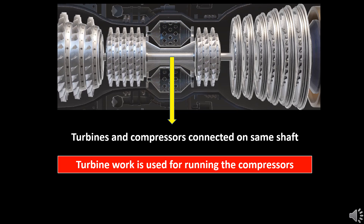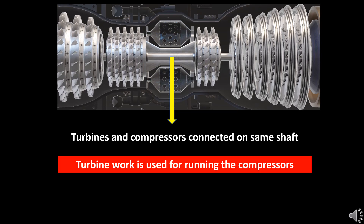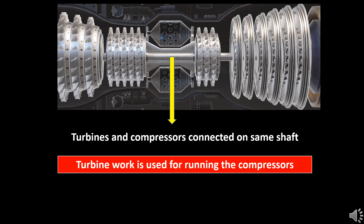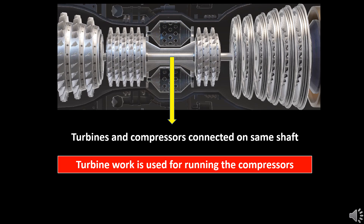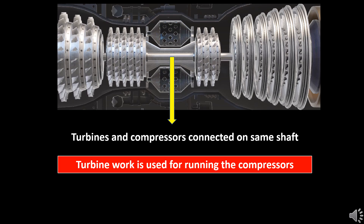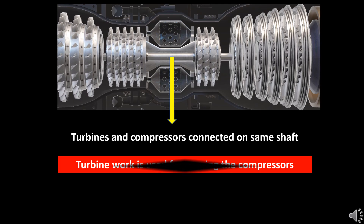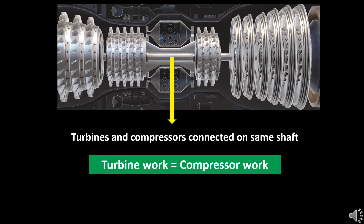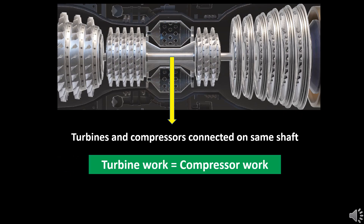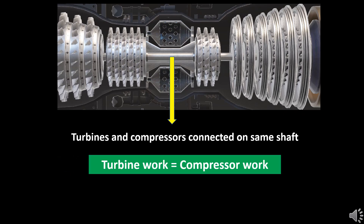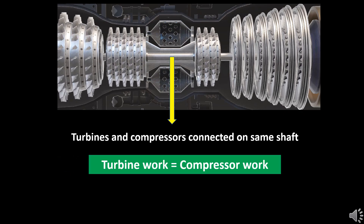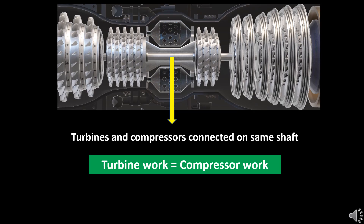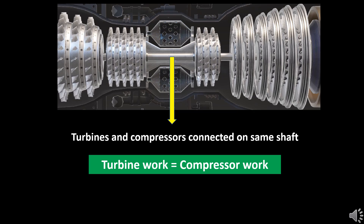Thus the work produced by the turbine is used for rotating the compressors and increasing the air pressure for combustion. This cycle continues and thrust is produced continuously during the flight.